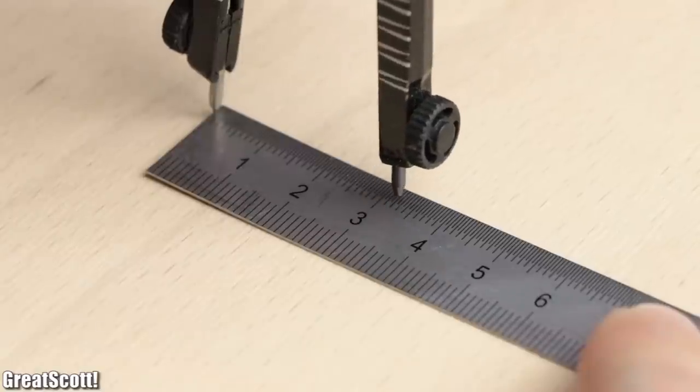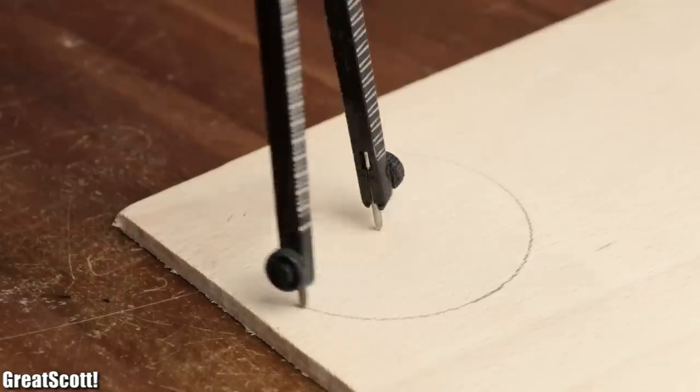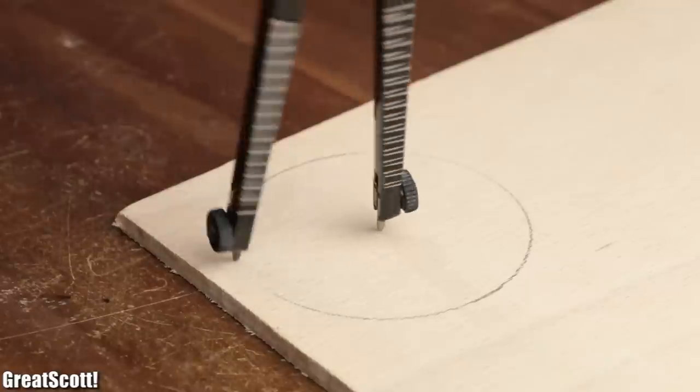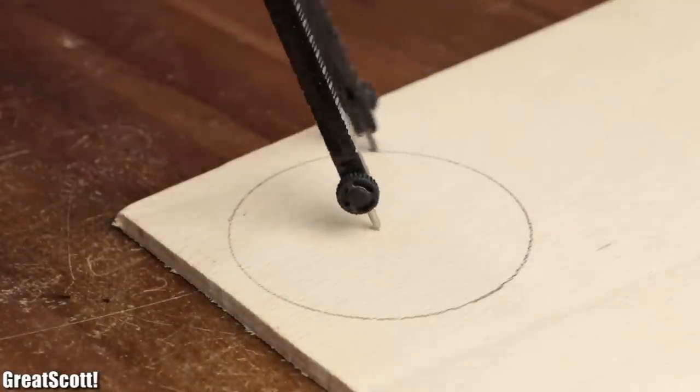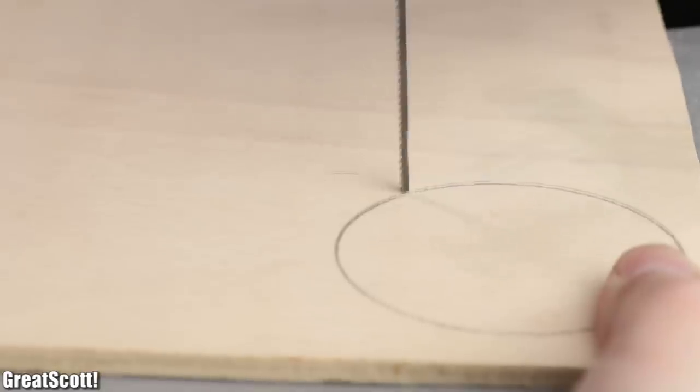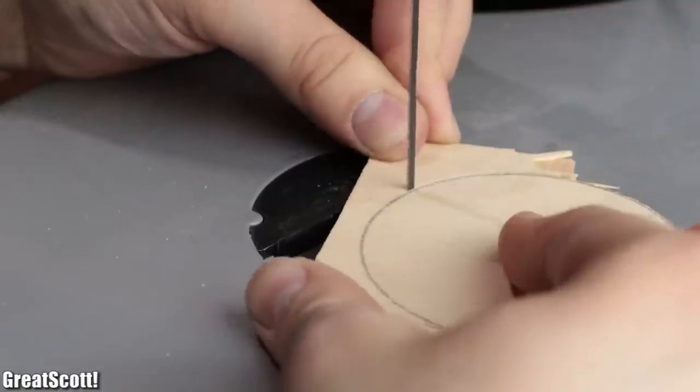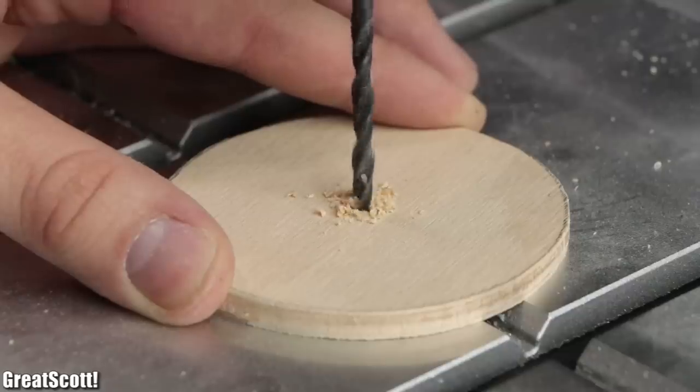Before I continued by utilizing a compass to mark a circle with a diameter of 7 centimeters onto another piece of plywood. Through the help of my scroll saw, I cut out the circle shape and used the 4 millimeter drill bit once again to create a hole in the center of it.